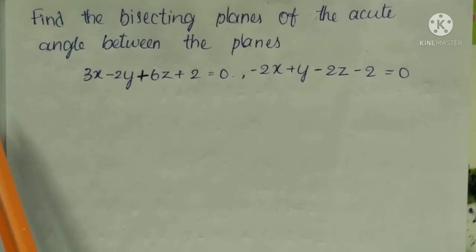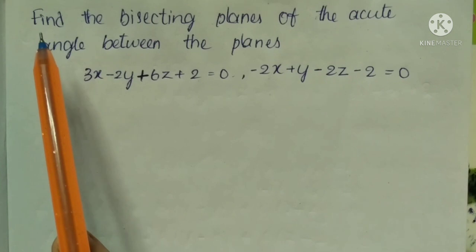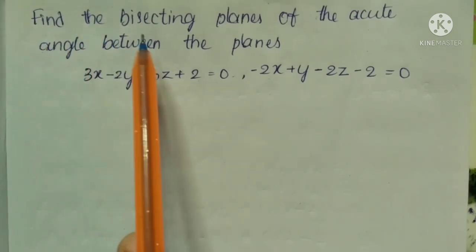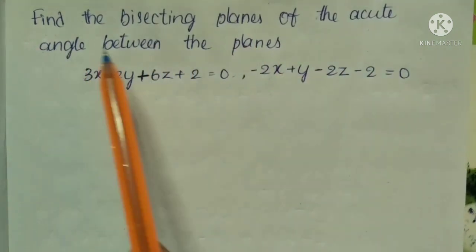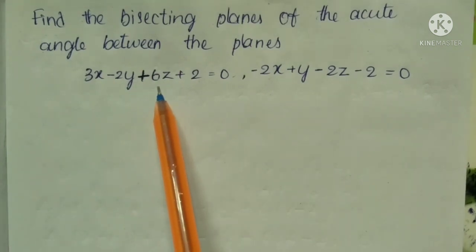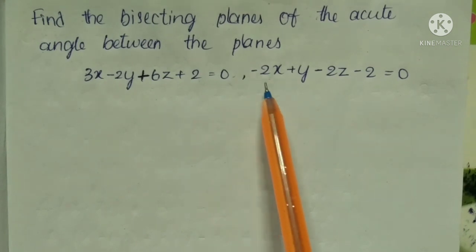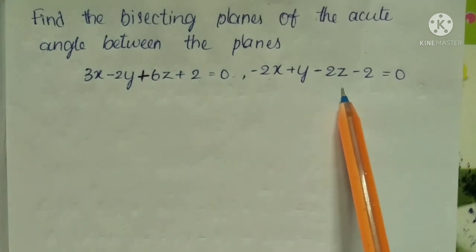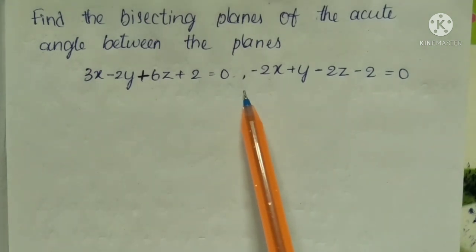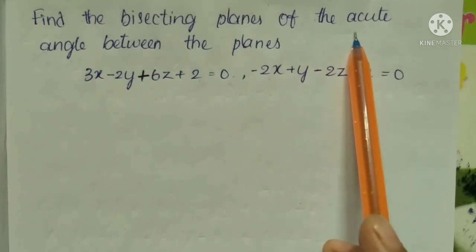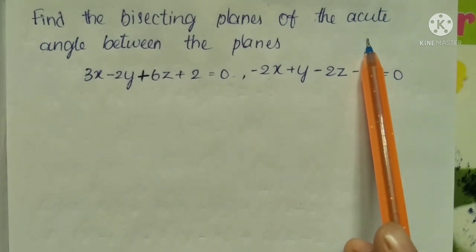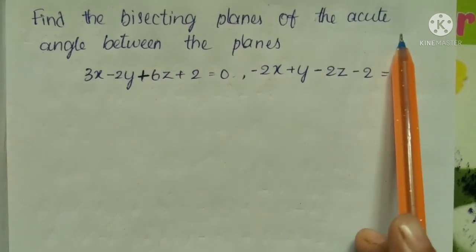Please check the description. And this is question number 2. The problem is: find the bisecting planes of the acute angle between the planes 3x minus 2y plus 6z plus 2 equals 0, and minus 2x plus y minus 2z minus 2 equals 0.